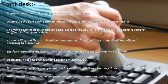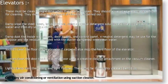Suction clean the floor of the elevator if carpeted, otherwise mop the hard floor. Suction clean the door track on the floor using a crevice cleaner attachment on the vacuum cleaner. Lightly damp dust the ceiling and light fixtures; these may be thoroughly cleaned periodically. Clean any air conditioning or ventilation grills using the suction cleaner.